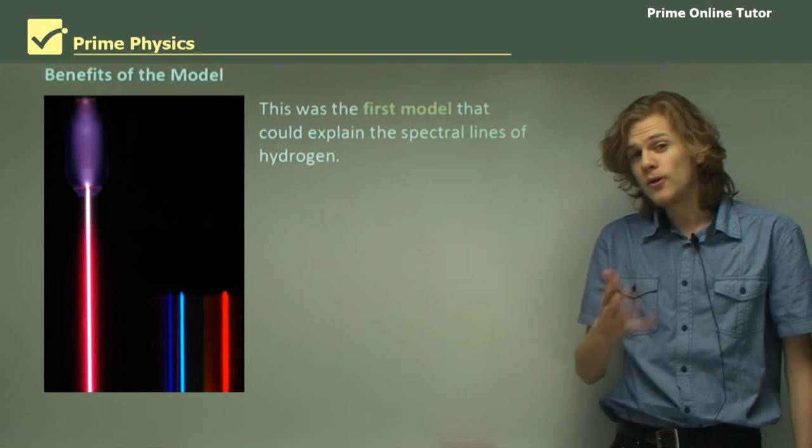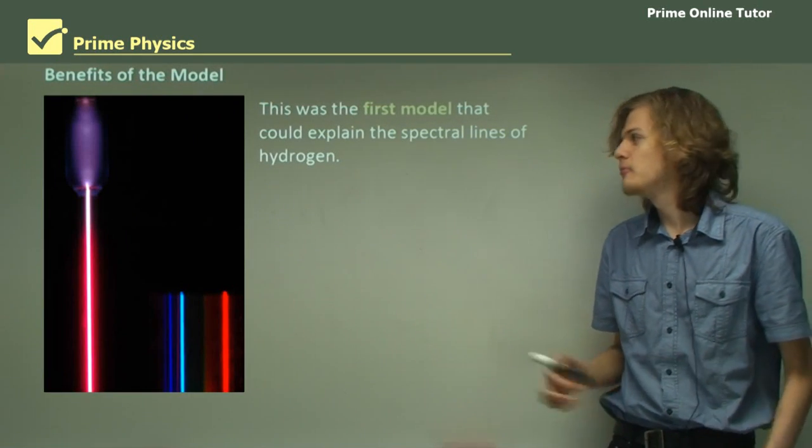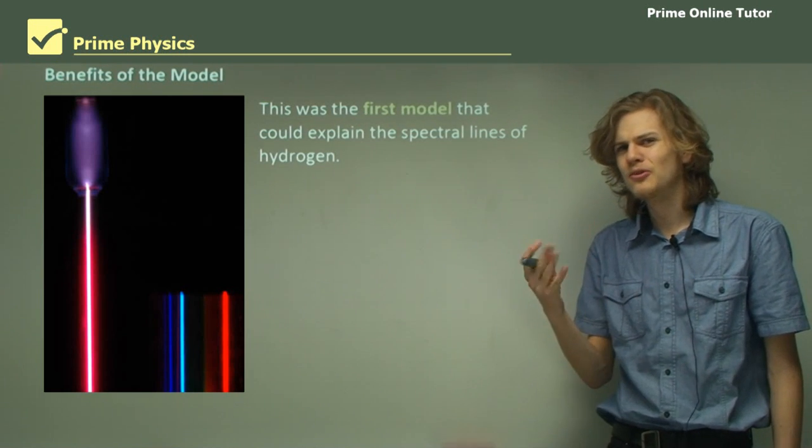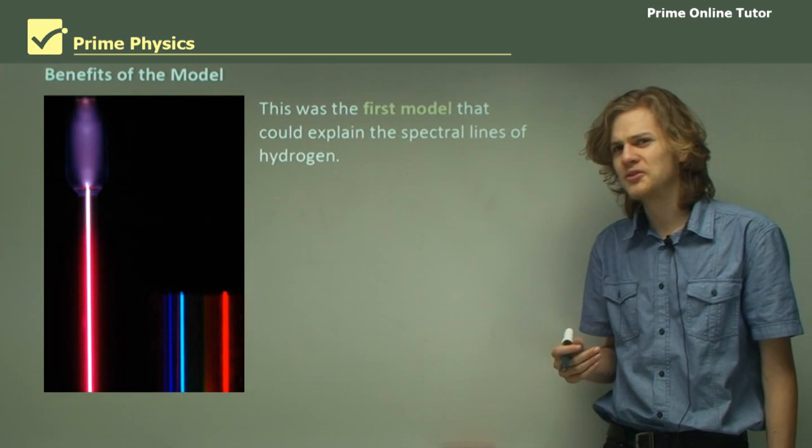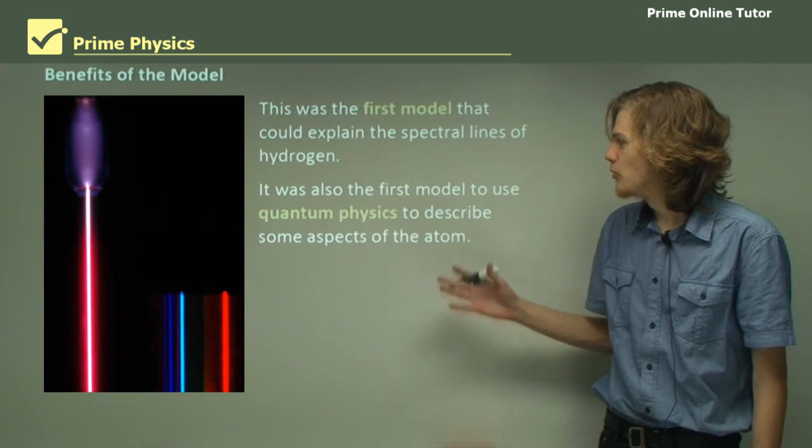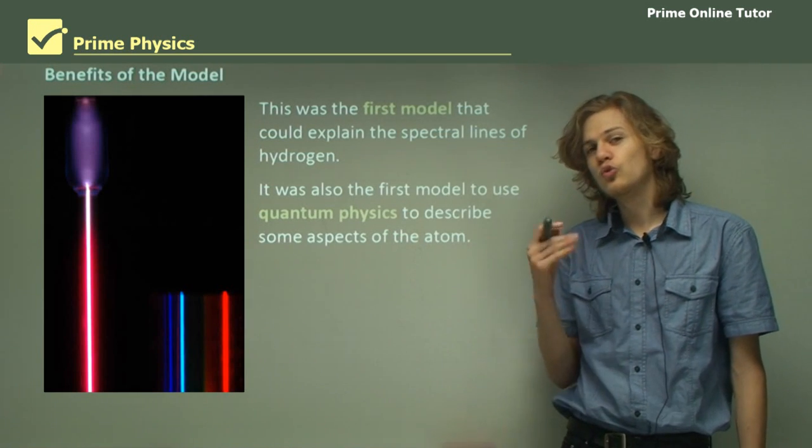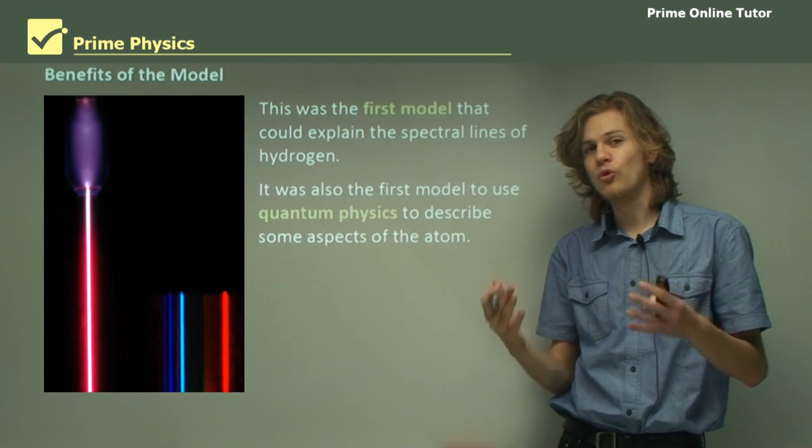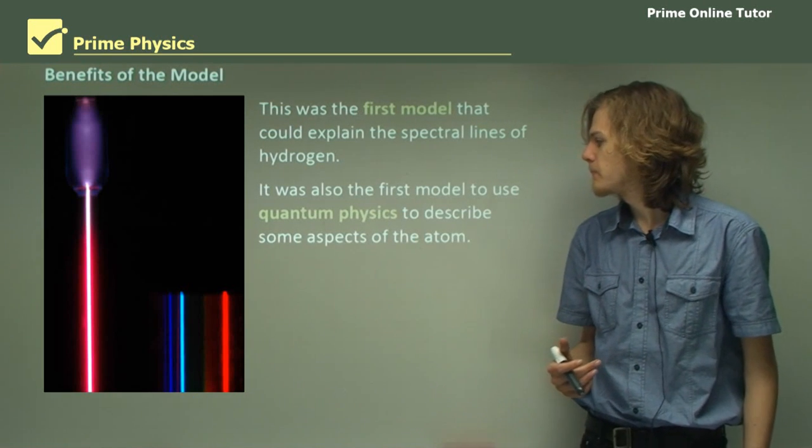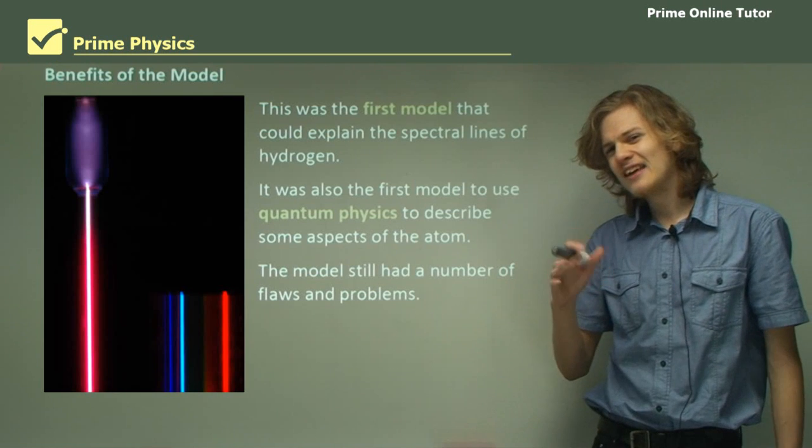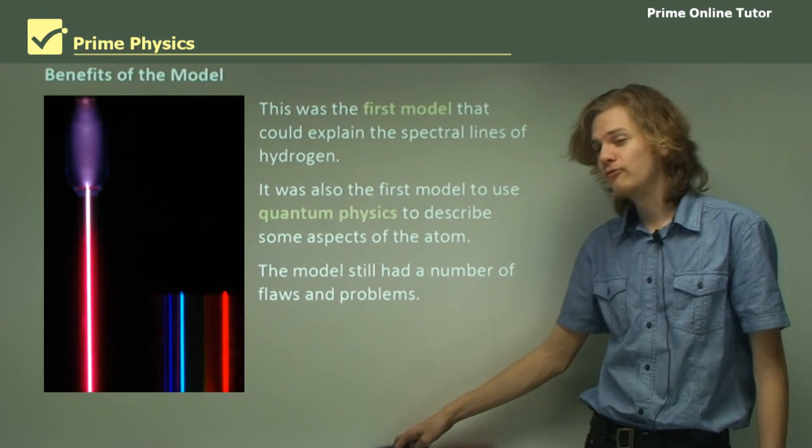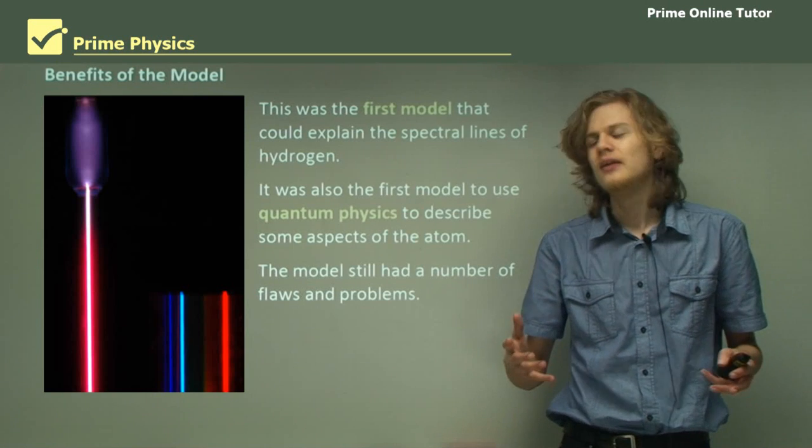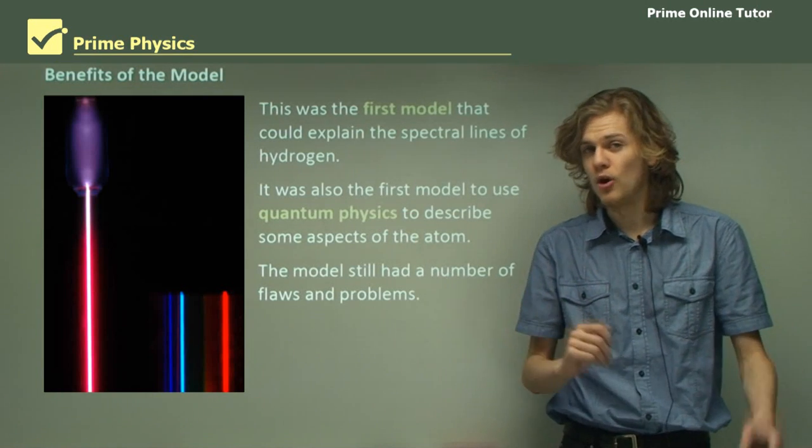So this was the first model that could successfully describe the spectral lines of hydrogen. Which is pretty good, because up until that point they were a little bit of a mystery. It was also the first model that used quantum physics to describe some aspects of the atom. The thing before that had been using classical physics. The model still had a number of flaws and problems. It was a big step forward, especially using quantum physics to model the real world. But it was far from perfect.